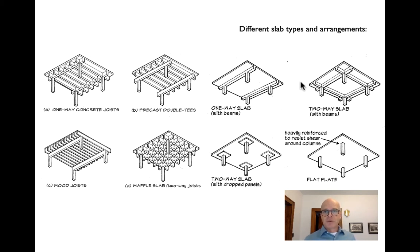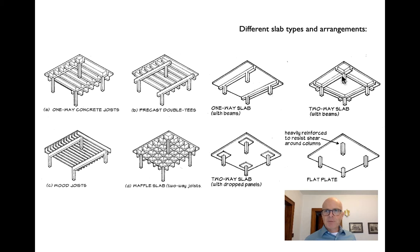A two-way slab with beams is super efficient — we have a thin slab spanning in multiple directions with two-directional beams at every column. We rely on the depth of the beam and the perimeter of the column to take the very heavy shear load of that slab. For timber, we're usually more worried about deflection than shear, but we still try to get two-way behavior: decks spanning in the short direction, joists in the long direction, and beams spanning as well.